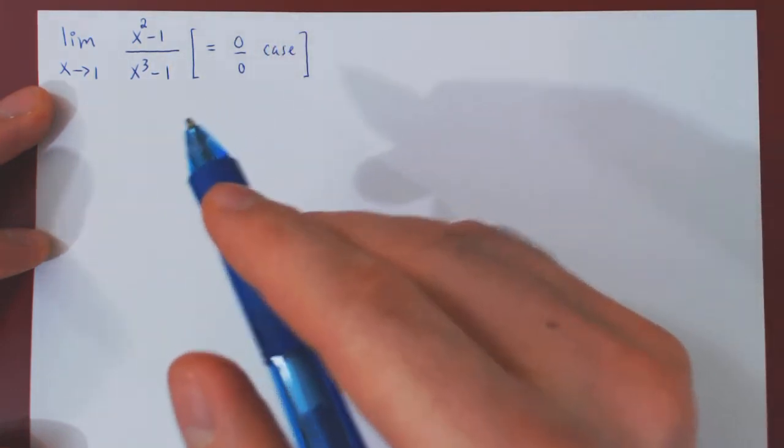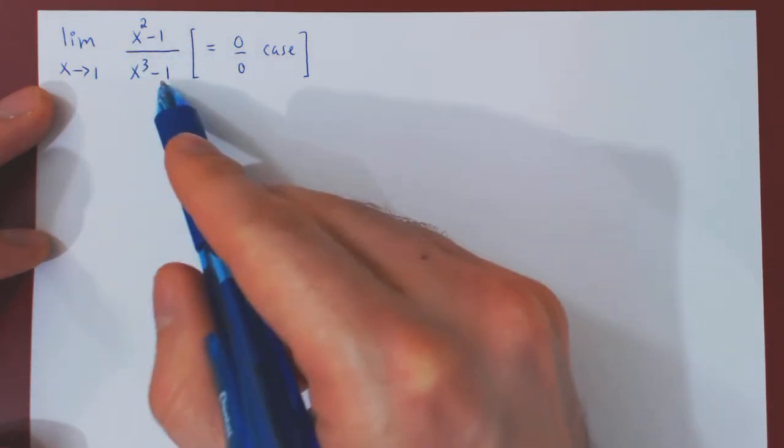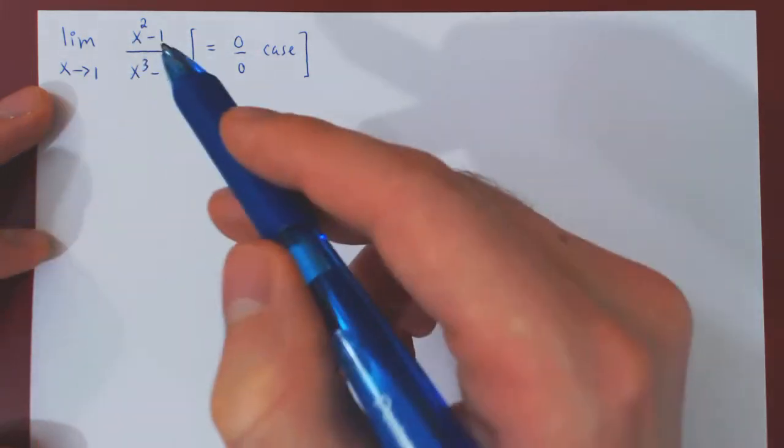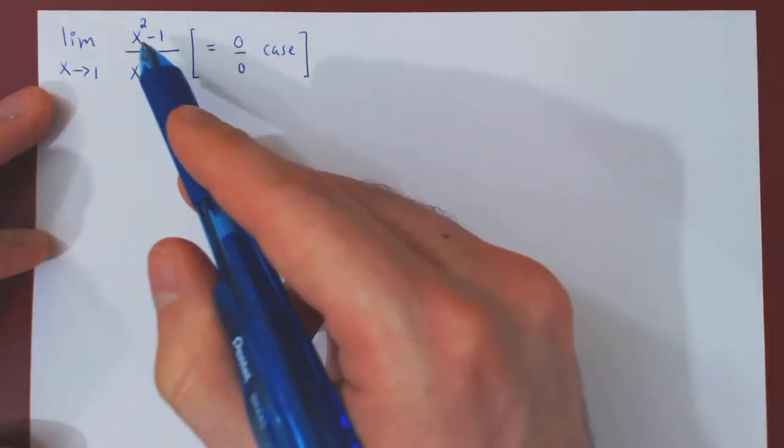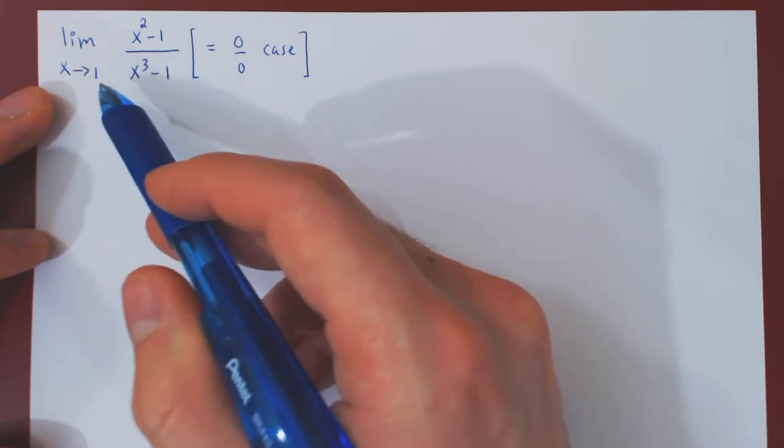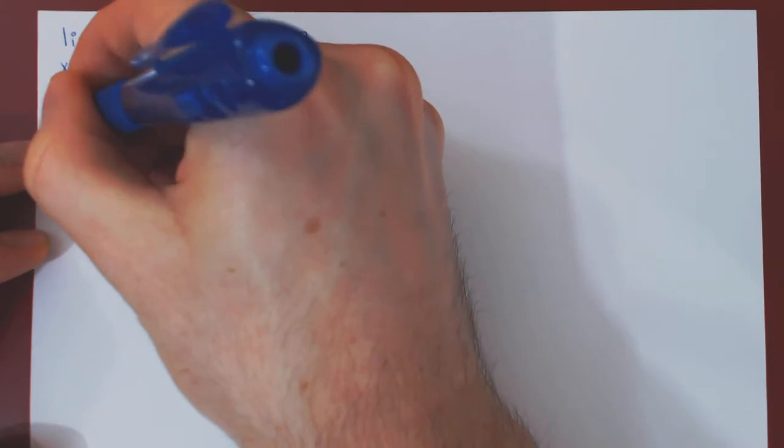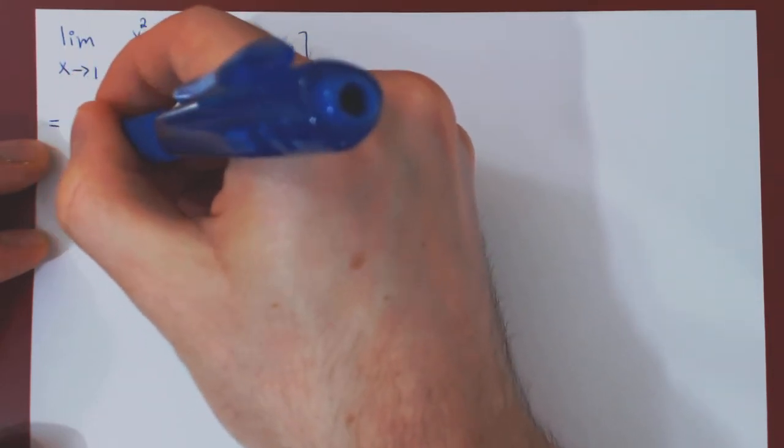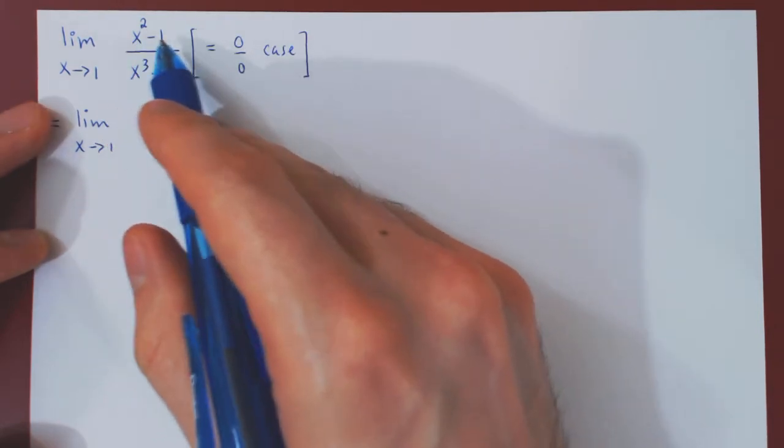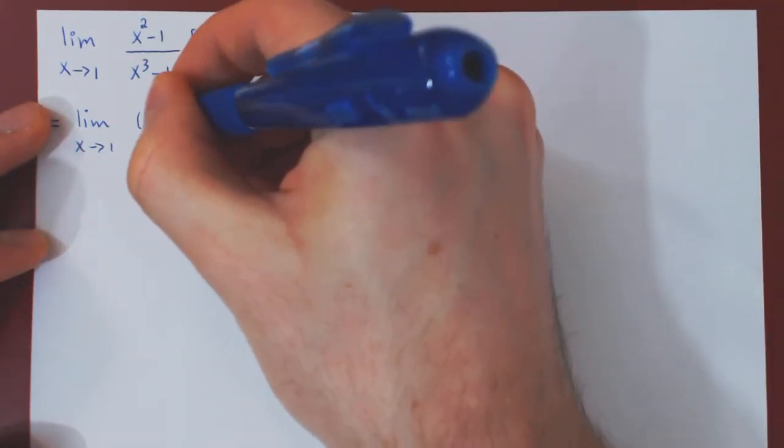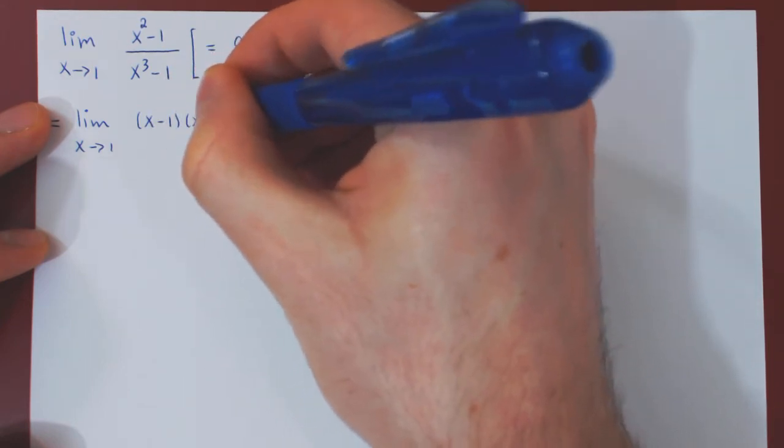Using first the method of factoring, so we have two polynomials, and they are both 0 at x equals 1, and so by the factor theorem, both polynomials must have as a factor x minus 1. So we want to factor both polynomials. Well, the first one is trivial. x squared minus 1 factors as x minus 1 times x plus 1.